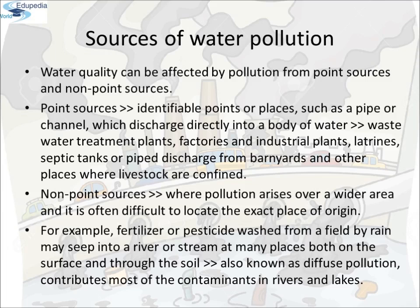Non-point sources are those where pollution arises over a wide area and it is often difficult to locate the exact place of origin. For example, fertilizer or pesticide washed from a field by rain may seep into a river or stream at many places, both on the surface and through the soil. Pollution from non-point sources, also known as diffuse pollution, contributes most of the contaminants in rivers and lakes. Other non-point sources include pollution from construction sites and other land disturbances. This problem in identifying the exact point of origin makes non-point sources much more difficult to control.